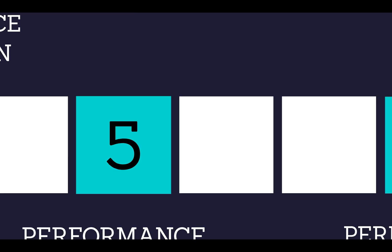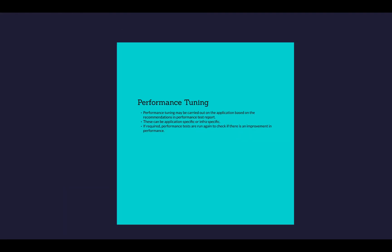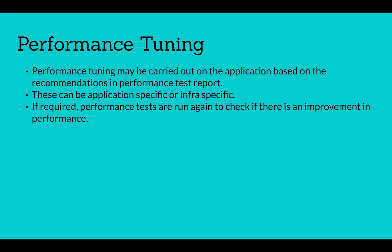Based on the report, performance tuning is carried out — tuning the application based on the recommendations received during performance testing. For example, if CPU utilization is at 90%, the number of CPUs or the amount of RAM may be increased. If coding issues are found, the development team fine-tunes the code. Performance tuning can be application-specific or infrastructure-specific.